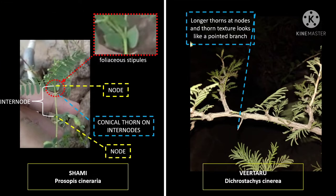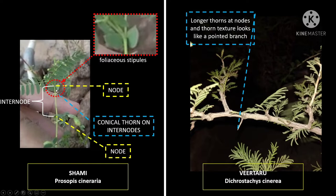Another prominent feature visible even on a small, newly growing shami plantlet is foliaceous stipules. This is a compound leaf because it has multiple leaflets on both sides of the stipule. When you have a small leaf at the base of the compound leaf, it is called a foliaceous stipule. You will see a pair of small leaflets at the point of origin of the leaf blade — this arrangement is a typical characteristic of the shami plant.